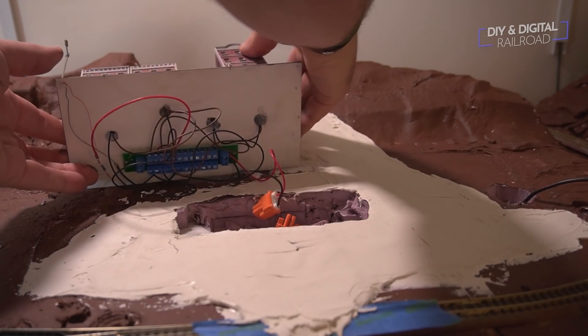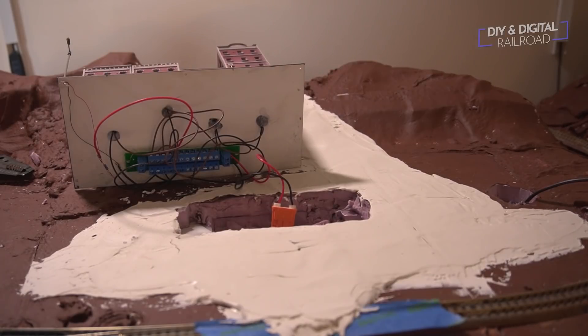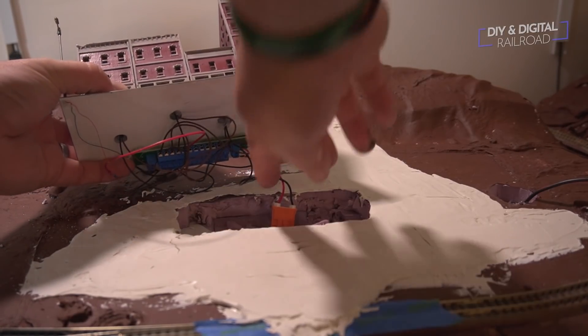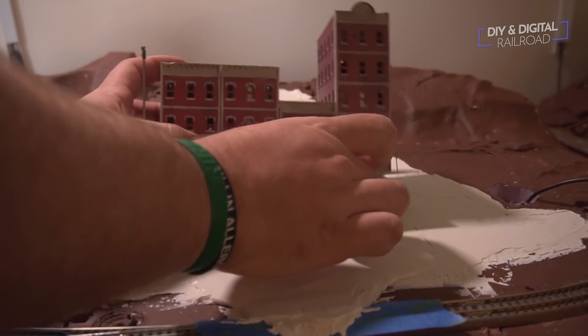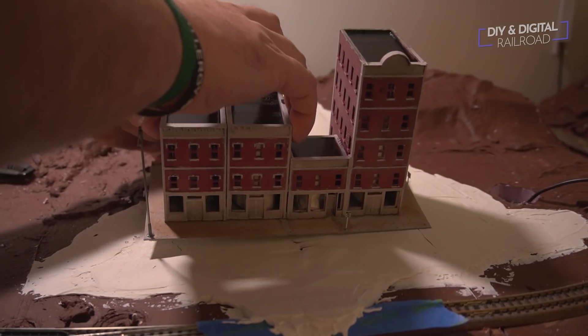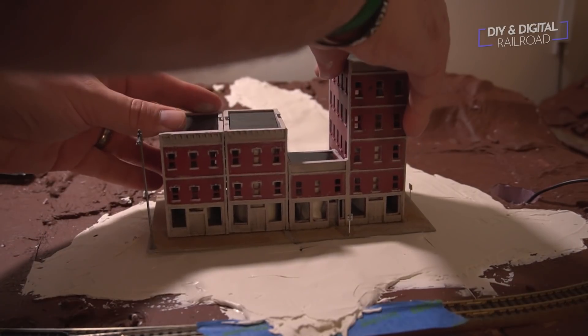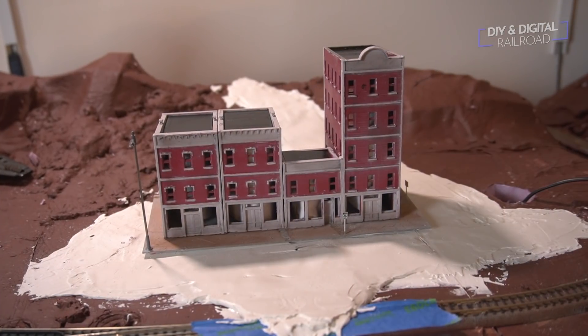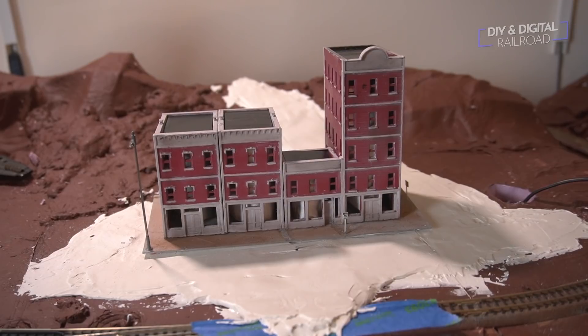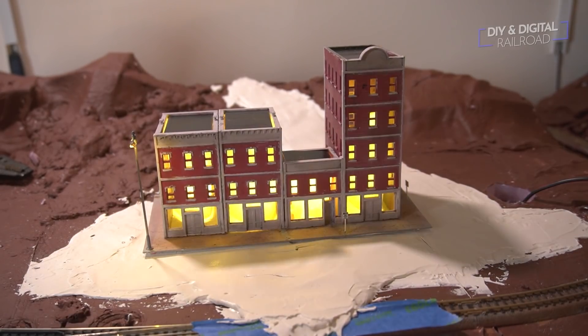And now it's time for the big moment where we put this on the layout. Now, one thing you may notice is that there is some white spackle right here. And that is from where I'm doing the roads. Now, I'm going to be doing roads in a future episode as well. You'll see a little bit in the upcoming layout update. But I needed these roads that basically the spackle material in place so that I could make sure that everything was flat and even. So I did go have to go ahead and do that before I put this in place. But I'm going to go ahead and plug this in and we're going to turn it on and we're going to see how it looks.